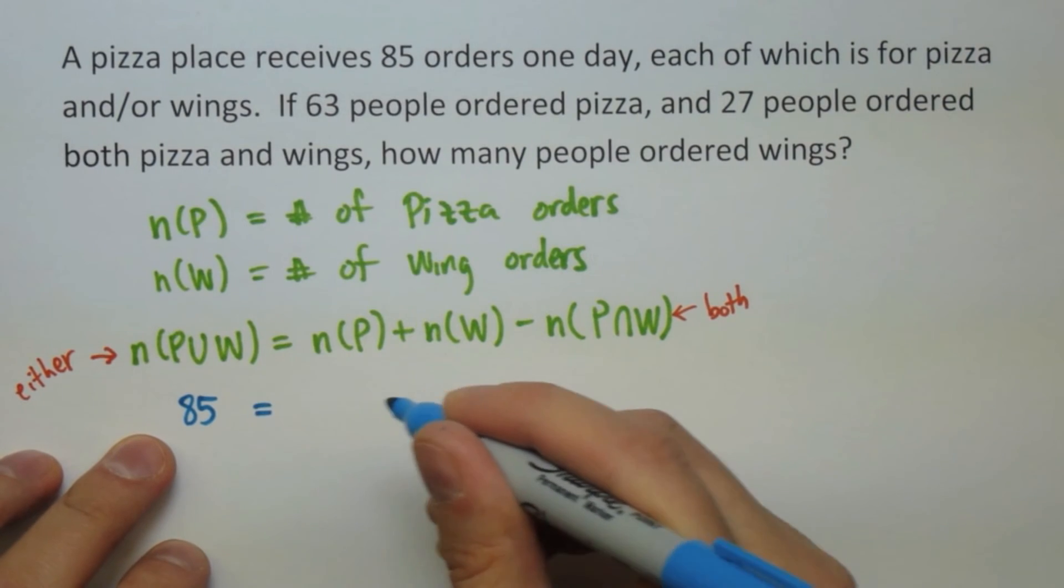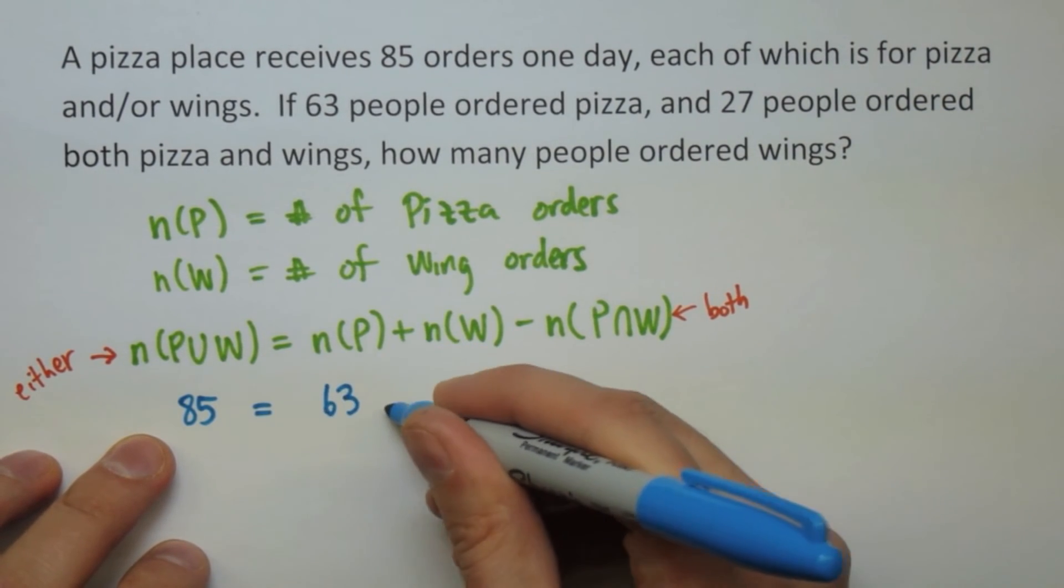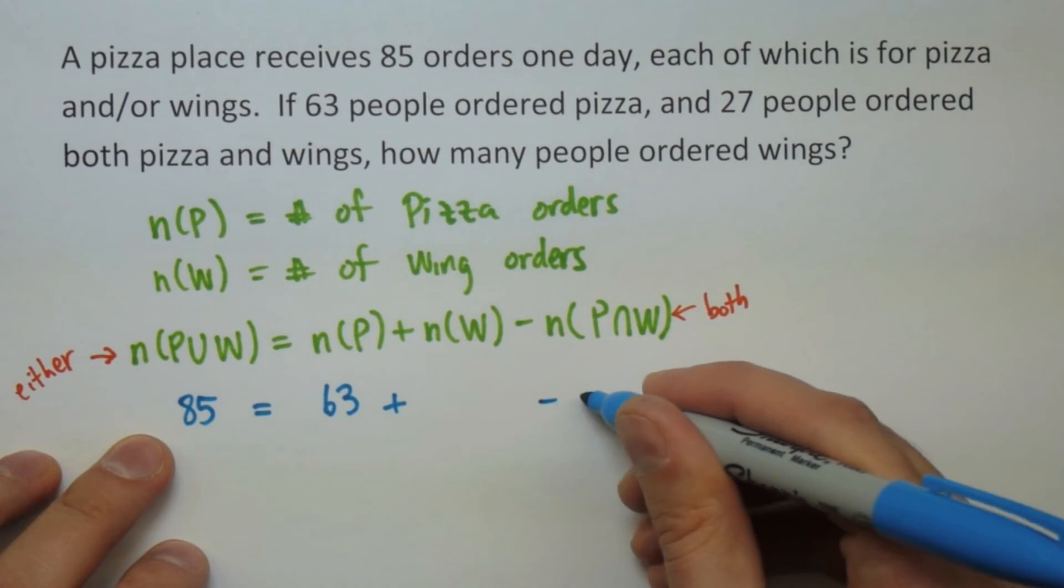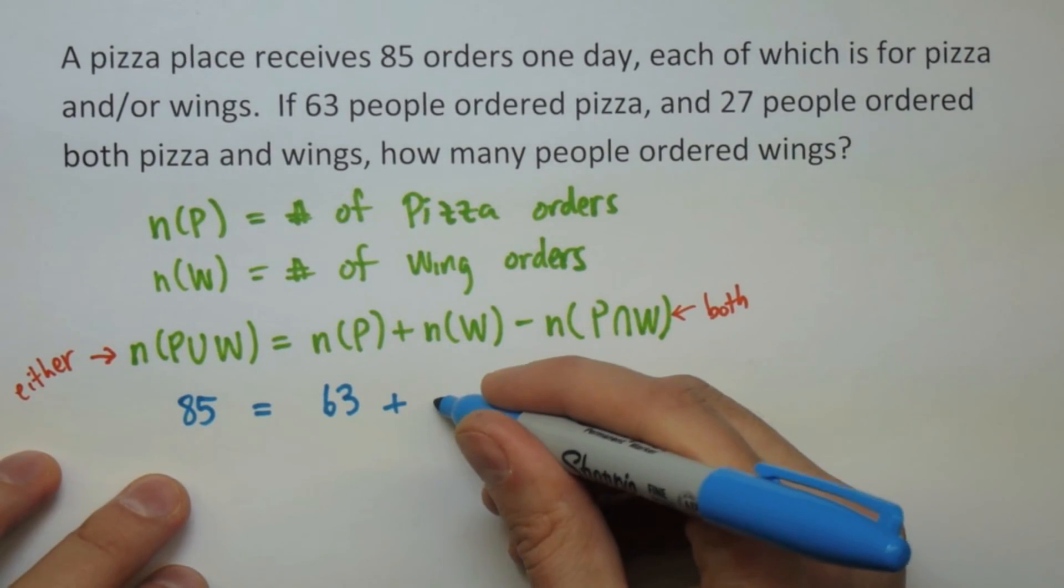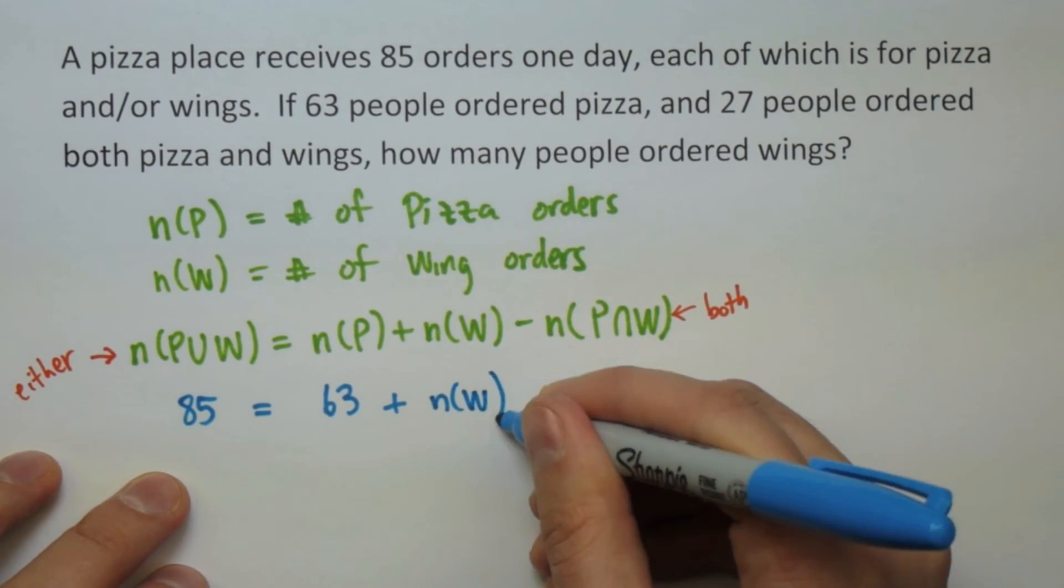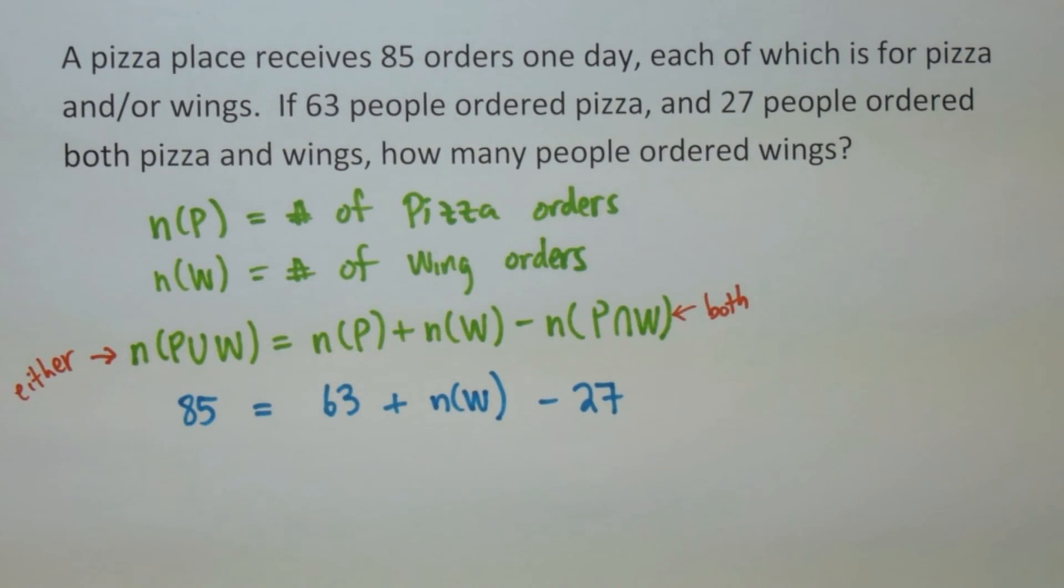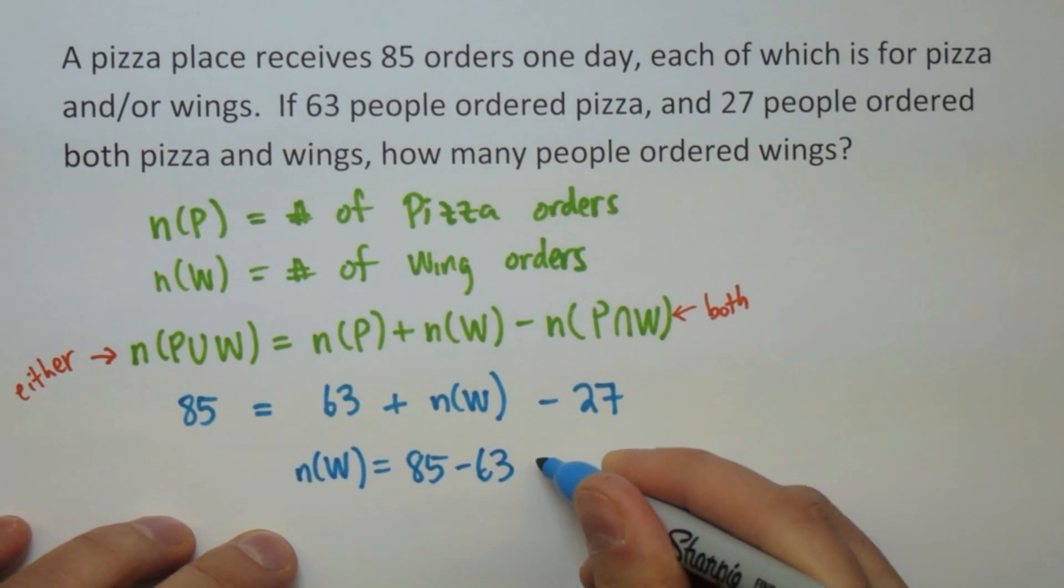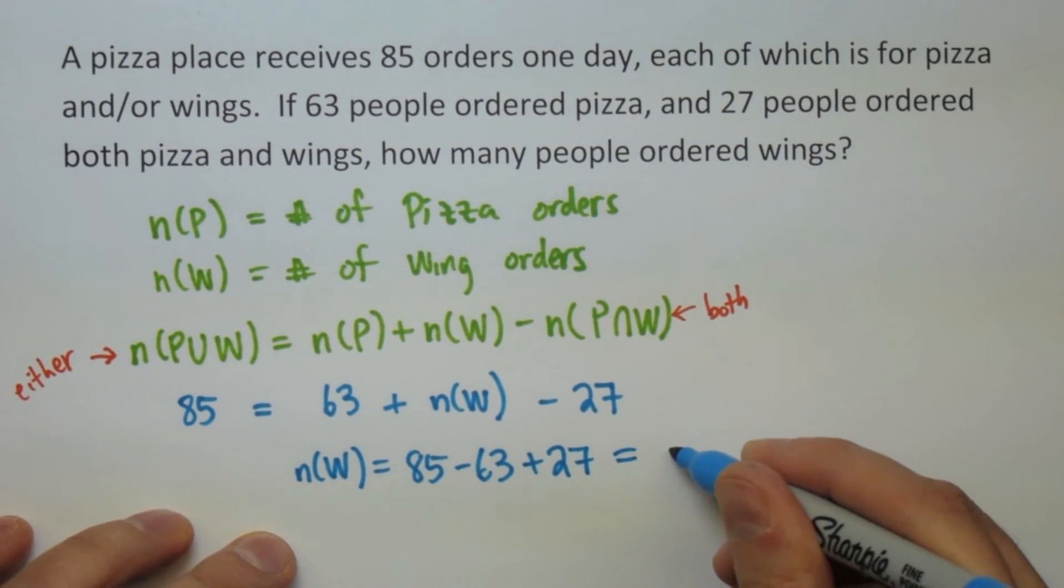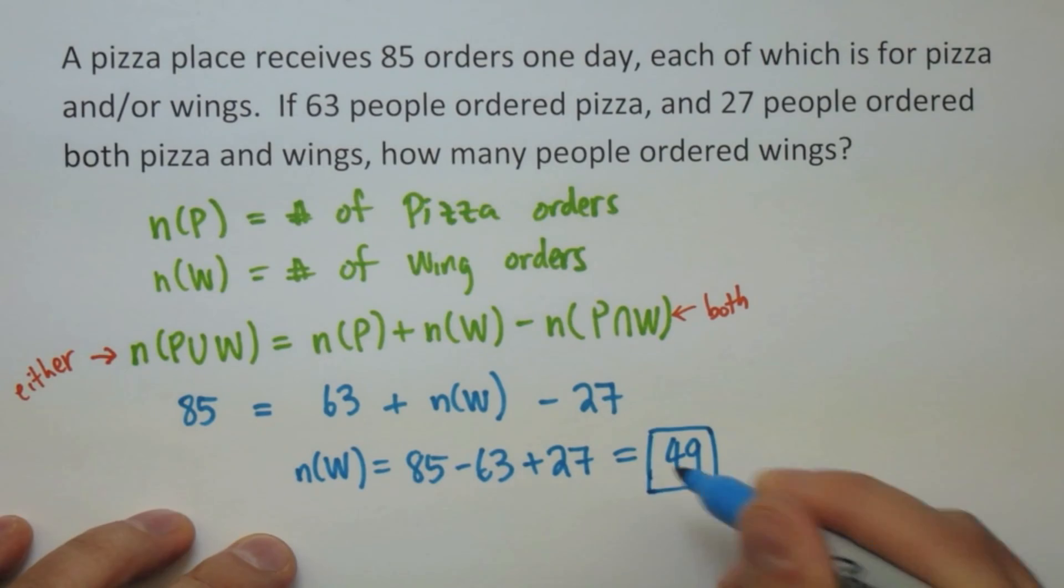So we start looking at the numbers. The union will be the 85 orders. Pizza is 63. Wings, we don't know, but we have 27 people that ordered both. And so N(W) is actually what we are trying to find, the number of people that ordered wings in their order. So if we solve this for N(W), we have 85 minus 63 plus 27, which is 49. So 49 people ordered wings with their order.